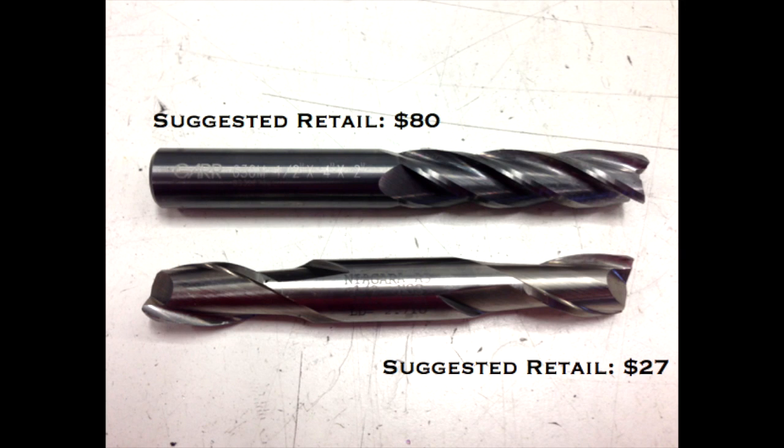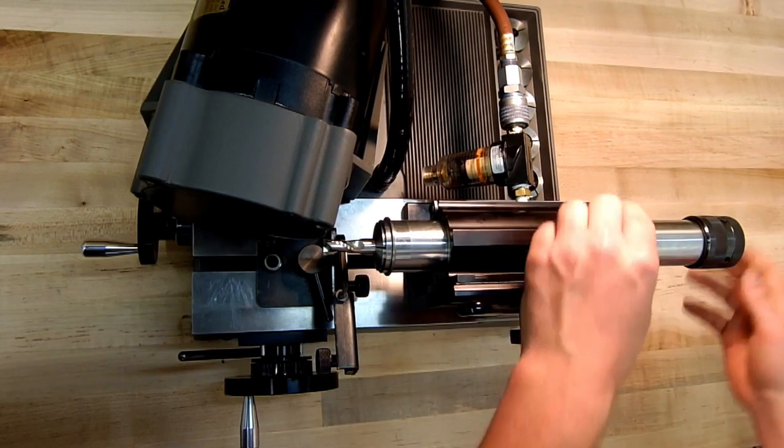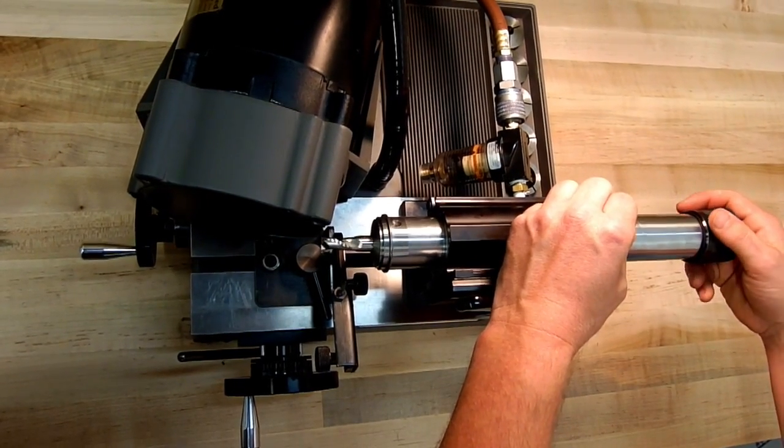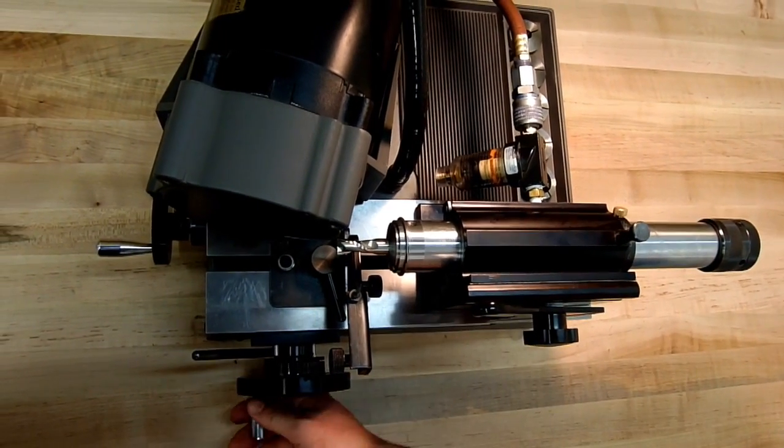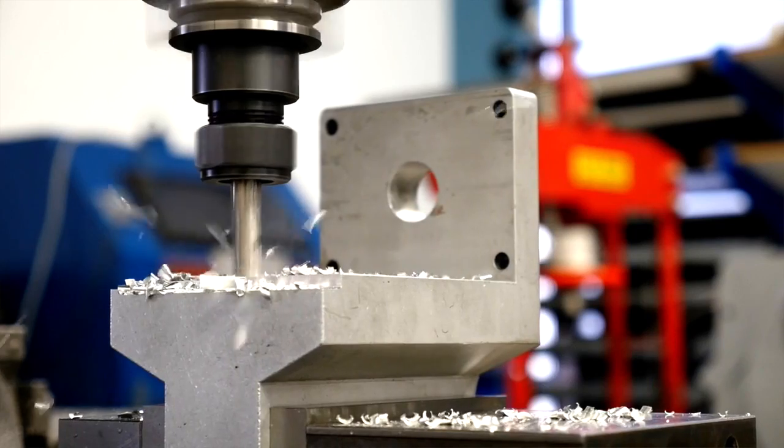Both endmills pictured are examples of commonly used job shop or OEM tooling. As new, they perform very well until they get dull. What then?